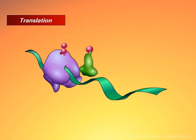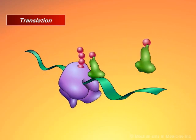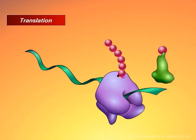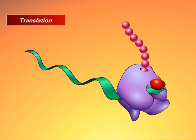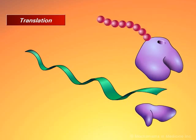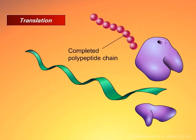The ribosome will continue to add amino acids to the growing polypeptide chain until it reaches a point along the mRNA that signals it to stop. At this point, it releases the finished protein molecule.